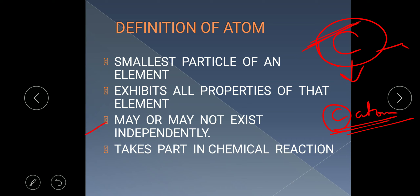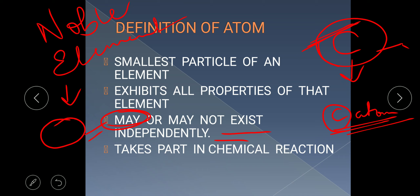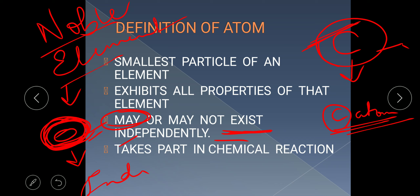The next key point is very important: an atom may or may not exist independently. It can exist independently when it is the atom of a noble element. Noble element atoms have completely filled their outermost shell, or their octet is filled. Such elements' atoms will exist independently. Whereas, other elements' atoms whose outermost shell is not filled with eight electrons will not exist independently.